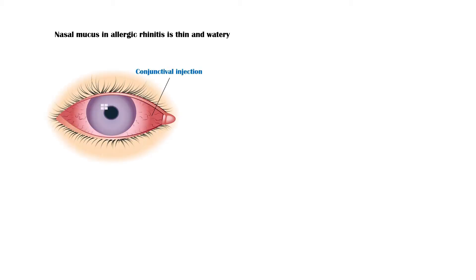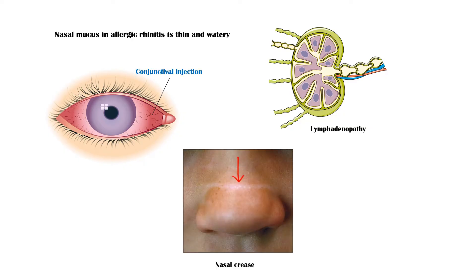The nasal mucus secreted in allergic rhinitis is thin and watery. Some individuals may also have conjunctival injection, lymph node enlargement, especially in the neck, and nasal crease due to repeated upward rubbing of the tip of the nose.